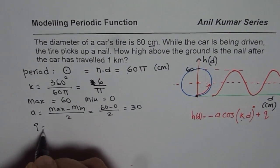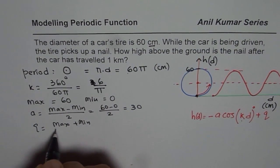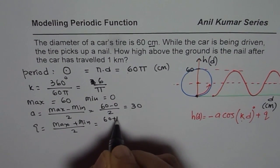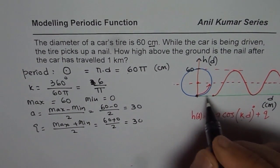q, the axis, is average value, which is maximum plus minimum, divided by 2, or 60 plus 0 divided by 2, or 30. So you got all that.